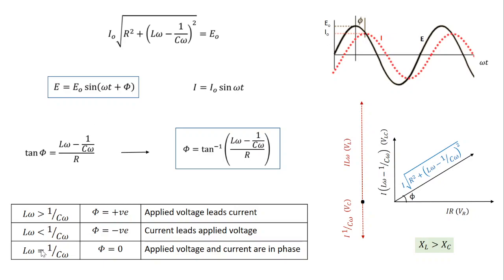In the third case, when Lω equals 1/Cω, the numerator equals zero and therefore φ equals zero. So E = E₀ sin(ωt) and I = I₀ sin(ωt) — the applied voltage and current are both in phase. Depending on the values of inductive and capacitive reactance, the circuit in the first case looks similar to an LR circuit, in the second case similar to a CR circuit, and in the third case similar to a pure ohmic resistor circuit.